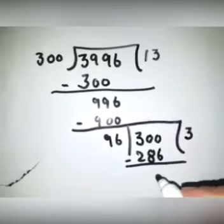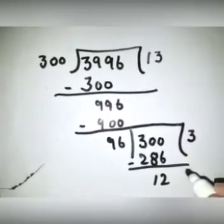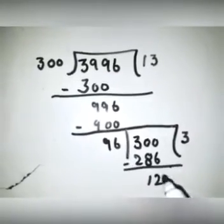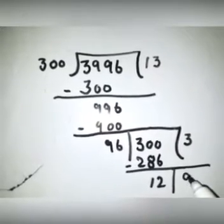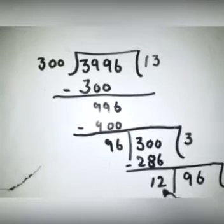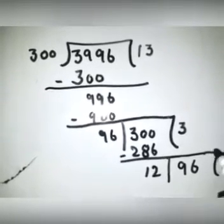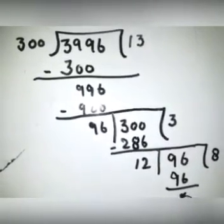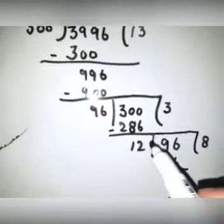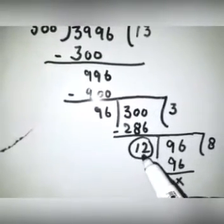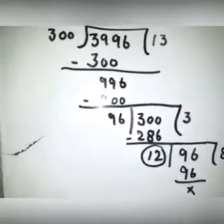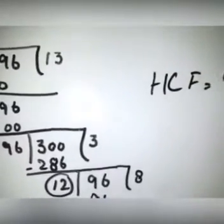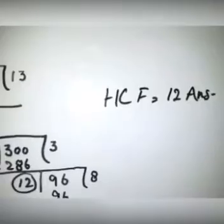If you divide 303 by 96, then 96 times 3 is 288. When you subtract them, the answer will be 12. Now this 12 is less than 96, so 96 will come here and you will divide 96 by 12. 12 times 8 is 96 — the division is complete. The HCF of these values is 12, because 12 is the last value that completely divides.